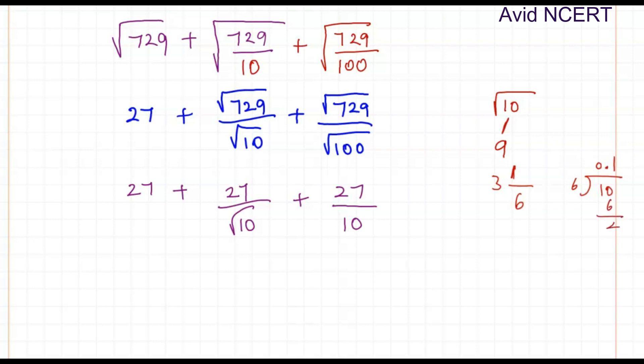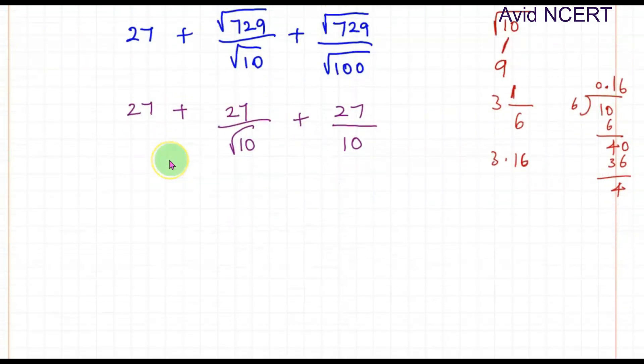So 6 times 1 is 6. So 4 0. 6 times 6 is 36. So difference is 4. So it keeps going like this. Therefore 3.16. So 1 by 6 value is 0.16. So 3.16. That is the value of square root of 10.